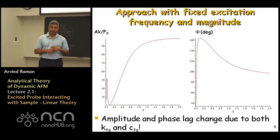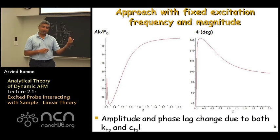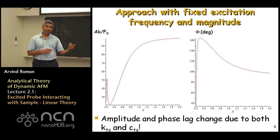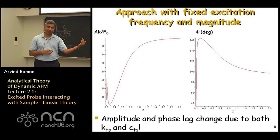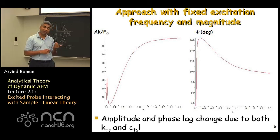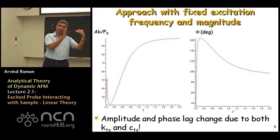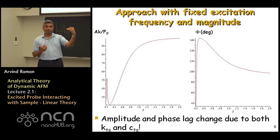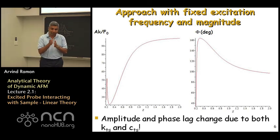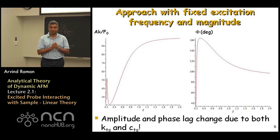When looking at the phase lag on the right-hand side: in the attractive regime the phase is above 90 degrees. However, when z becomes small enough that you're in the repulsive regime, the resonance frequency has shifted to larger frequencies and the phase now decreases to below 90 degrees. This is what would happen if one took a fixed drive frequency and approached the sample.